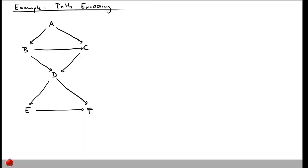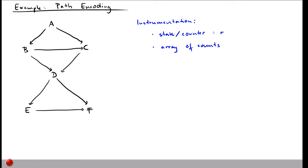Let me illustrate this idea using the running example introduced in the first video. Here's our control flow graph again. The algorithm adds some instrumentation to the normal execution of the program. There are two kinds of instrumentation: first, we add a counter called R, which is the number we sum up to get the path encoding.